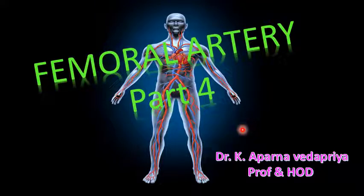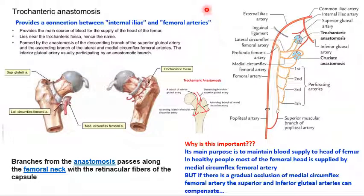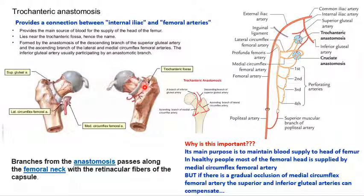In this video we will see the femoral artery in detail and the anastomoses it participates in with its neighboring arteries. The first is the trochanteric anastomosis, which is the main anastomosis providing blood supply to the head of the femur. It lies in the trochanteric fossa, just medial to the greater trochanter, and provides a link of connection between the internal iliac and the external iliac arteries.